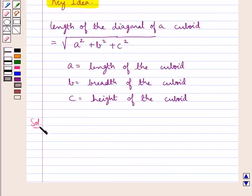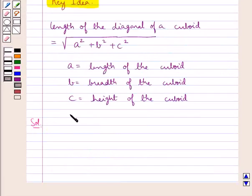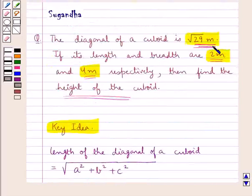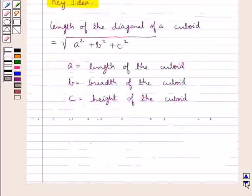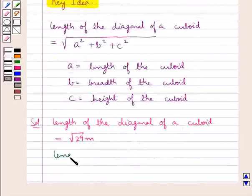Let's proceed with the solution now. In the question we are given the length of the diagonal of the cuboid, and we are given the length and breadth of the cuboid. We need to find the height of the cuboid. So we have the length of the diagonal of a cuboid equal to square root of 29 meters.